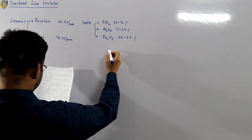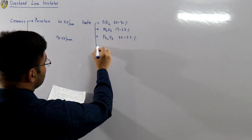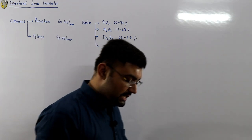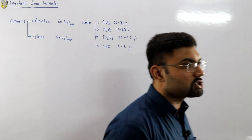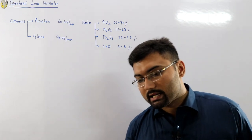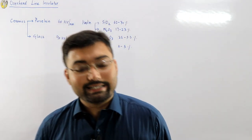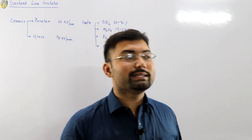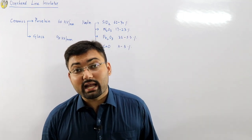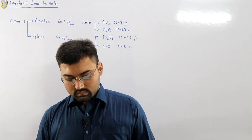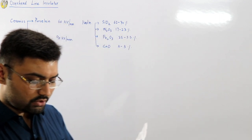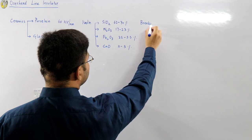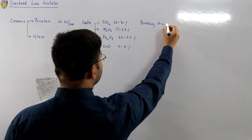These are mixed in the proper proportions and heated in a kiln up to 1200–1400°C. After processing, it is naturally cooled, becoming hardened and mechanically very strong. Its breaking strength is about 27 to 30 MPa.